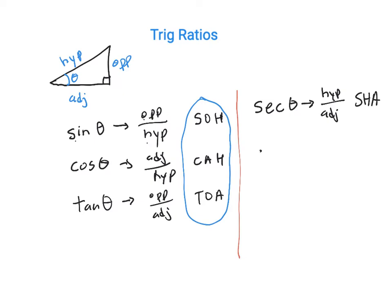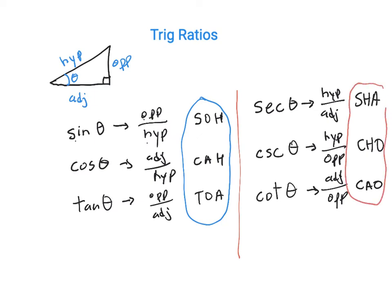There's another one called cosecant, which is CSC of theta. That is the reciprocal of sine. So that's hypotenuse over opposite. And so that looks like C-H-O. And then there's a cotangent ratio, cotangent theta, COT, which is formed by the adjacent over opposite. It's the reciprocal of the tangent. And so if you write that out, that's C-A-O. And in my mind, that looks like SHA-CHO-CAO, SHA-CHO-CAO.